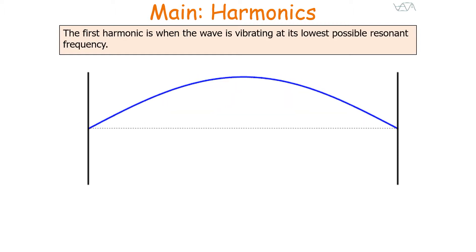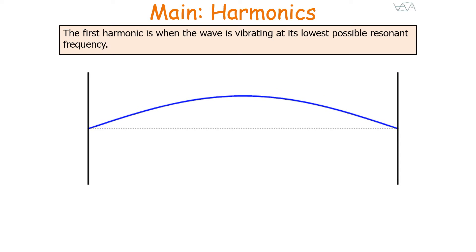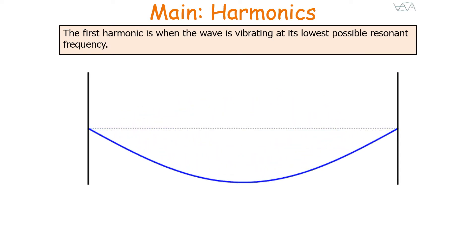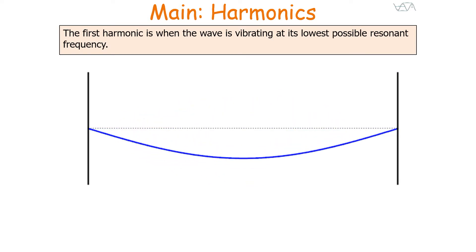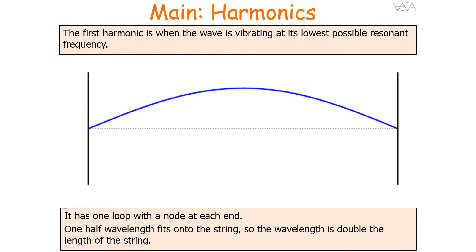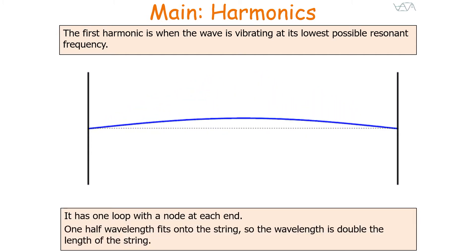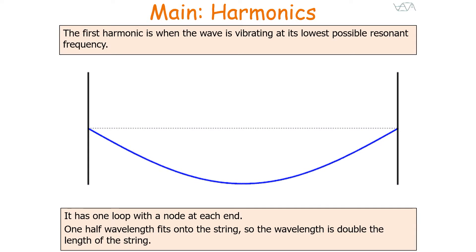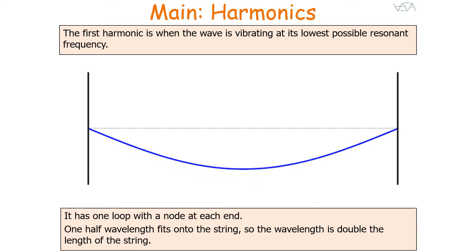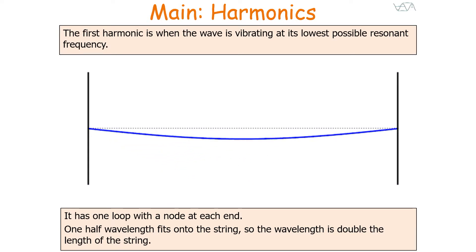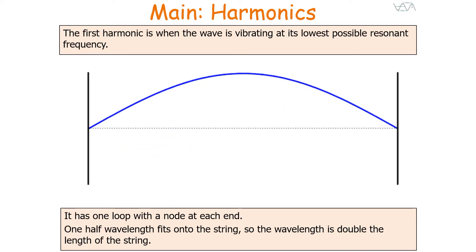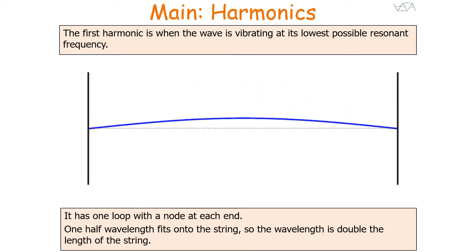The first harmonic is when the wave is vibrating at its lowest possible resonant frequency. In the first harmonic it has one loop with a node at each end, and one half wavelength fits along the entire string, so therefore the wavelength is double the length of the string that the standing wave is formed on.